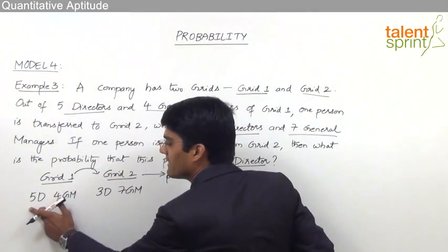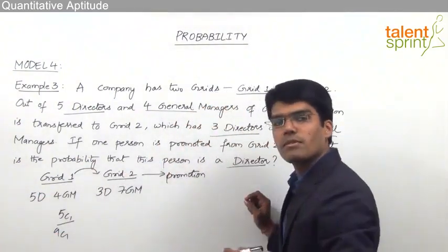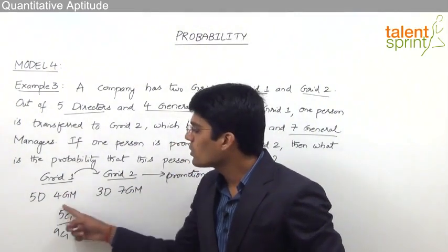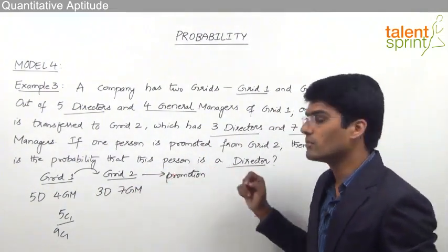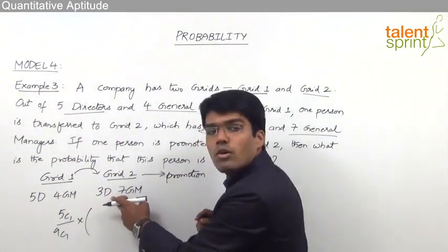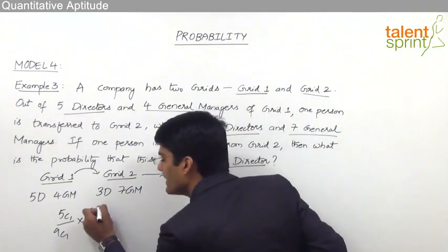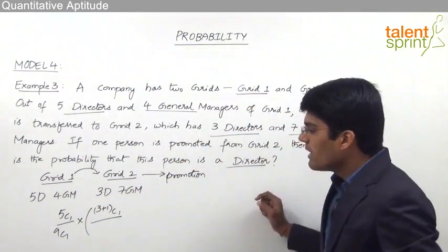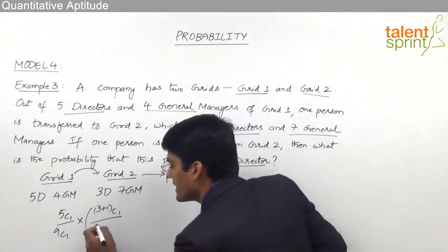For Case 1 — a director is transferred: the probability is 5C1 by 9C1, since there are 5 directors out of 9 total persons in Grid 1. Once the director is transferred to Grid 2, there are now 3 plus 1 equals 4 directors out of 11 total persons. So the probability of promoting a director becomes 4C1 by 11C1.